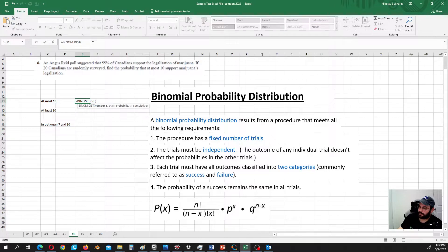Number of successes is 10. Number of trials is 20. Probability of success is 0.55. And this is cumulative. So it calculates all probabilities to the left from X, which in this case is 10.